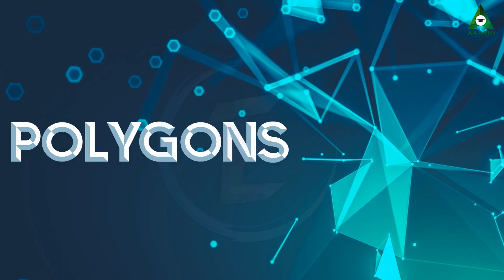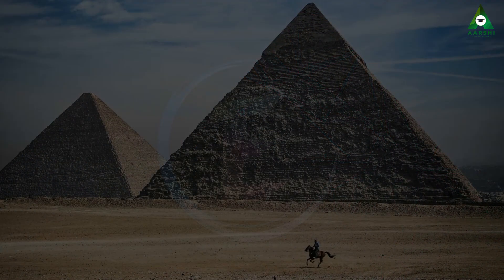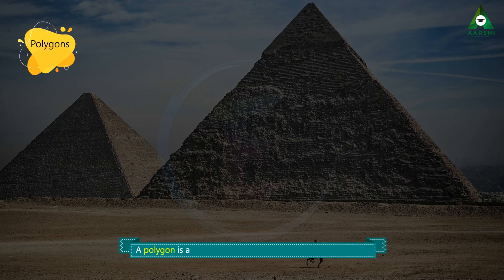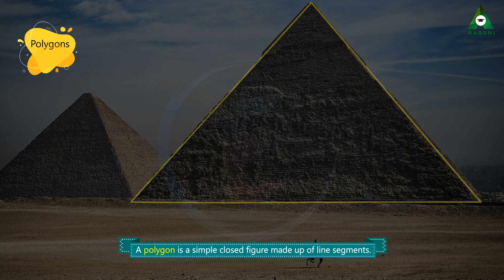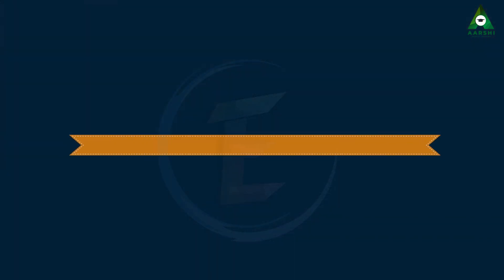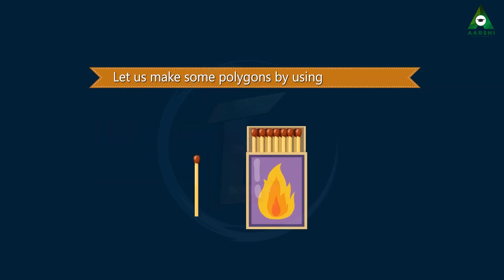Polygons. A polygon is a simple closed figure made up of line segments. Let us make some polygons by using matchsticks.